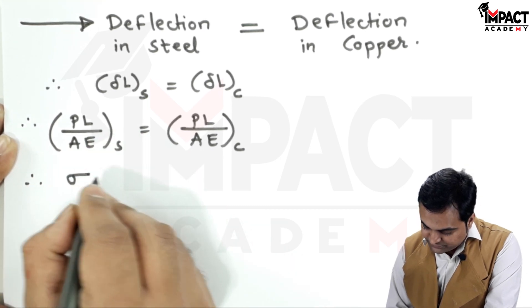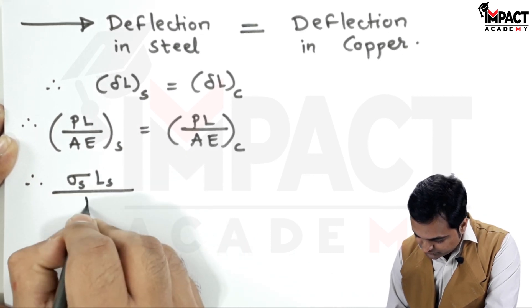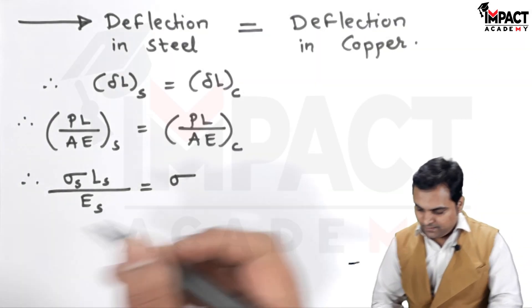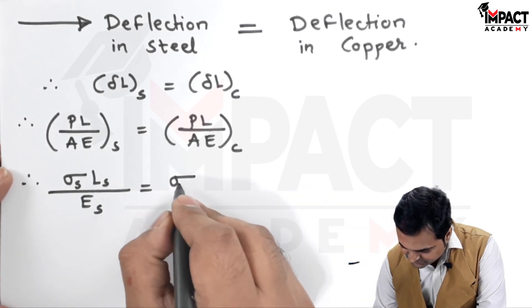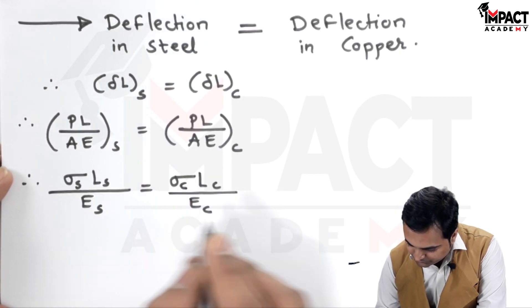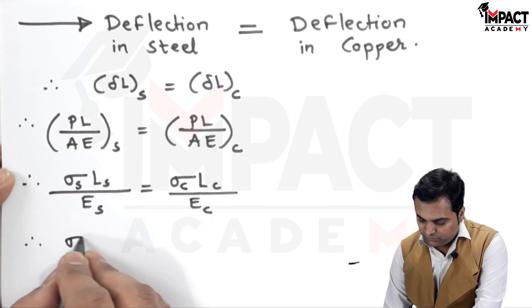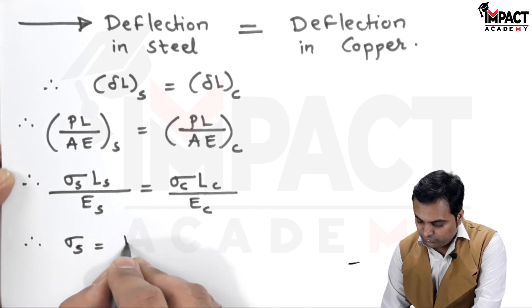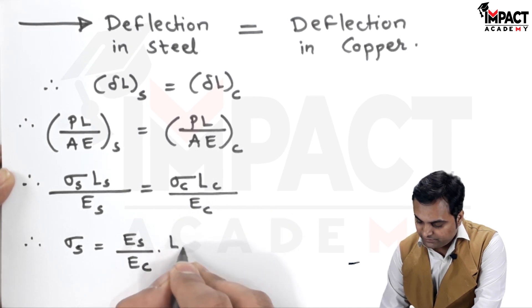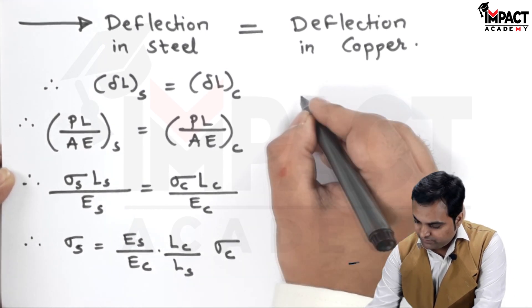Since P/A is stress, I can write: σ_s × L_s / E_s = σ_c × L_c / E_c. Rearranging, σ_s = (E_s / E_c) × (L_c / L_s) × σ_c, where σ_s is the stress in steel and σ_c is the stress in copper.